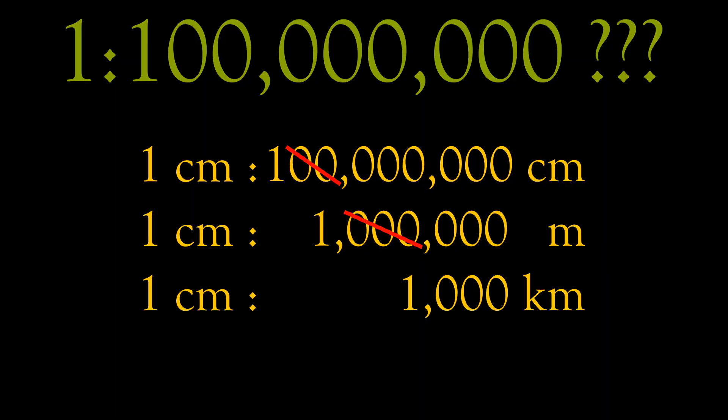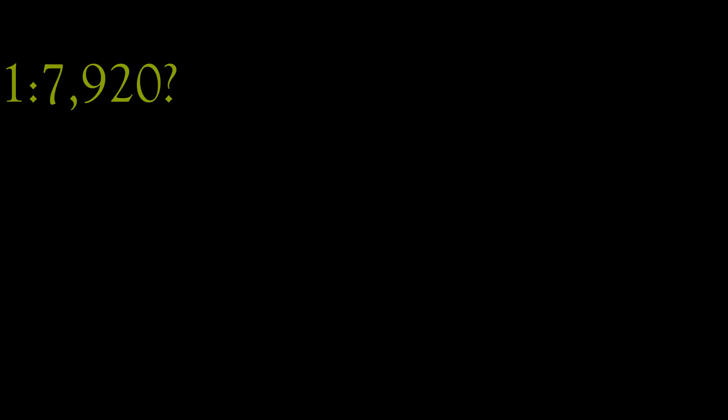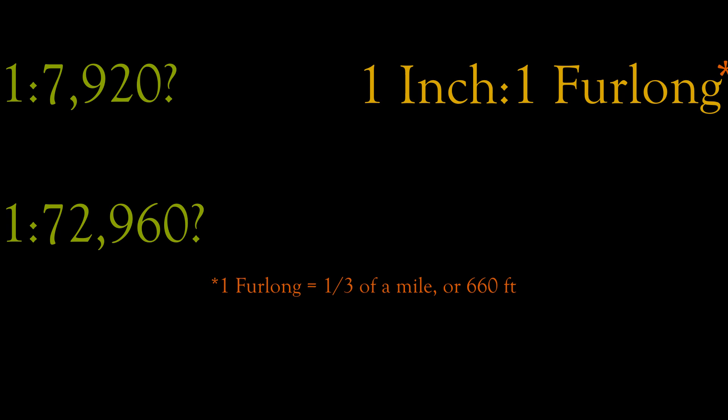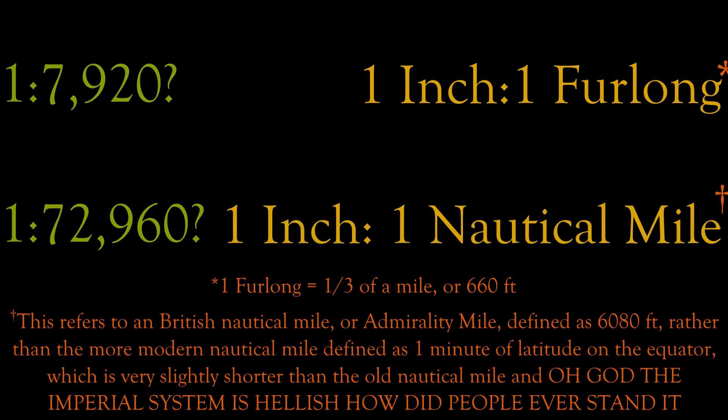Now some cartographic purists hate lexical scales — they think it's cheating, and that only the purity of numbers should be used to express scale. In my opinion, those purists are completely wrong. Maps are made to be read, and if you can't understand the scale, you can't read the map properly. If a lexical scale is clearer than a ratio scale, you should use the lexical scale. That becomes especially important when you're dealing with imperial units. What are you going to do with a scale of 1 to 7,920, or 1 to 72,960? Those are much easier to parse if you express them lexically, as 1 inch to 1 furlong or 1 inch to 1 nautical mile, respectively.